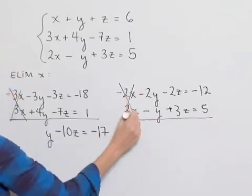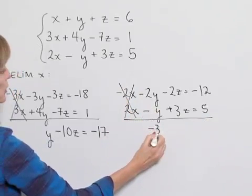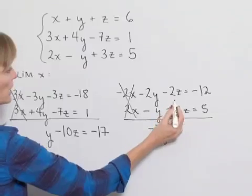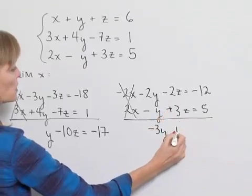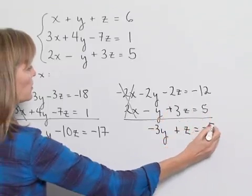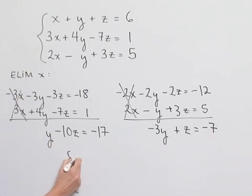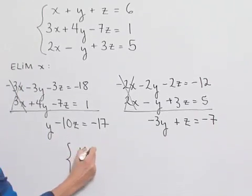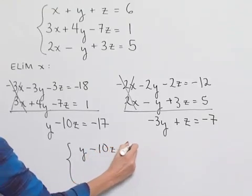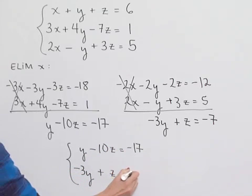We rewrite the third equation as is: two x minus y plus three z equals five. Combining, notice that we eliminate our x's. Negative two y minus y is negative three y. We have negative two z plus three z, so that's plus z. And that equals negative twelve plus five, which is negative seven. So we end up with a two equation, two unknown system: y minus ten z equals negative seventeen, and negative three y plus z equals negative seven.